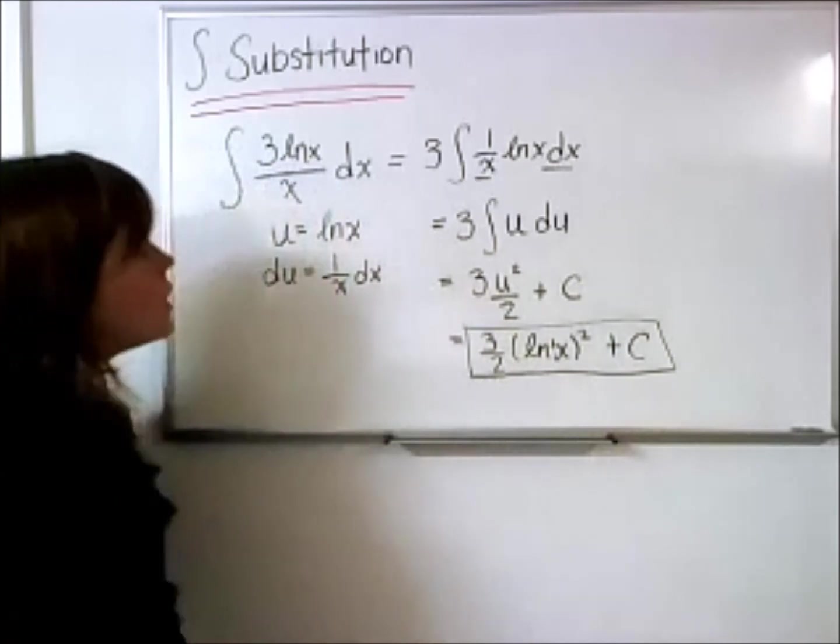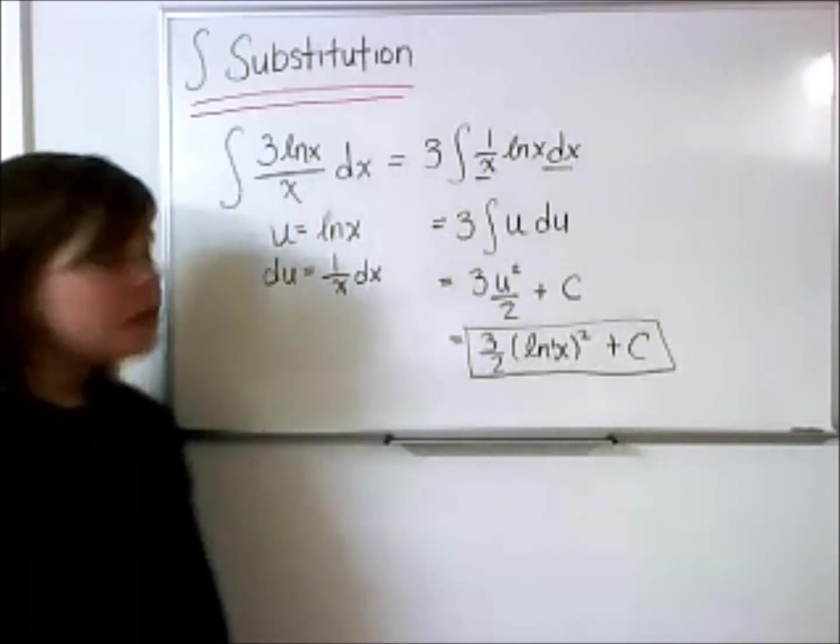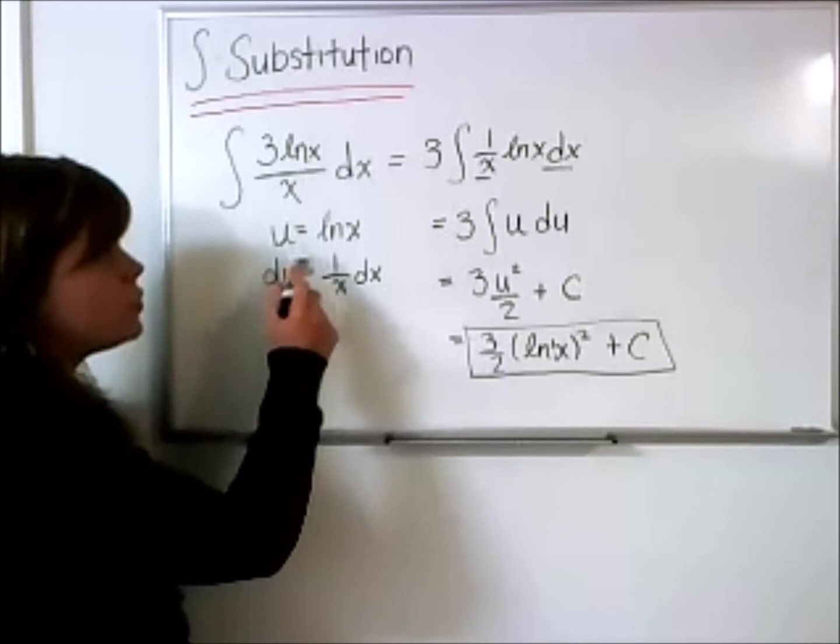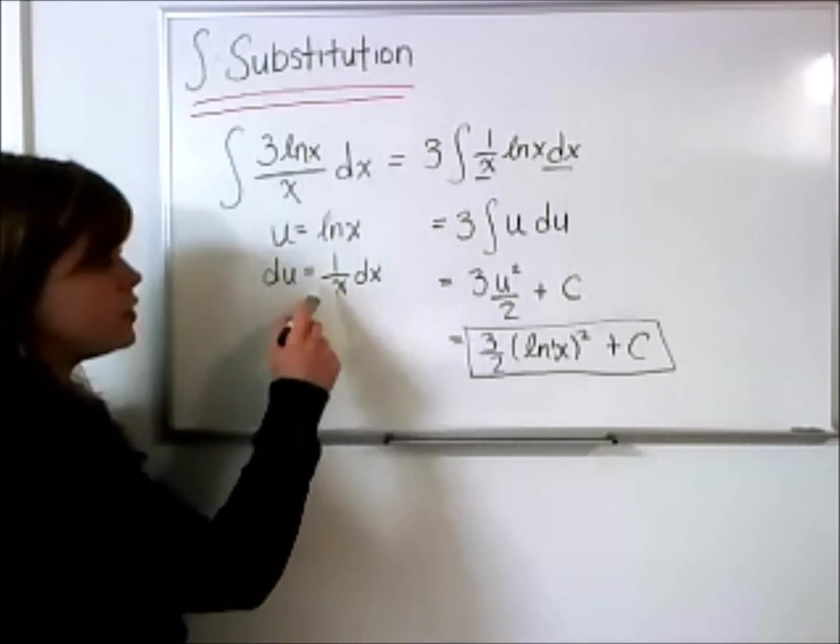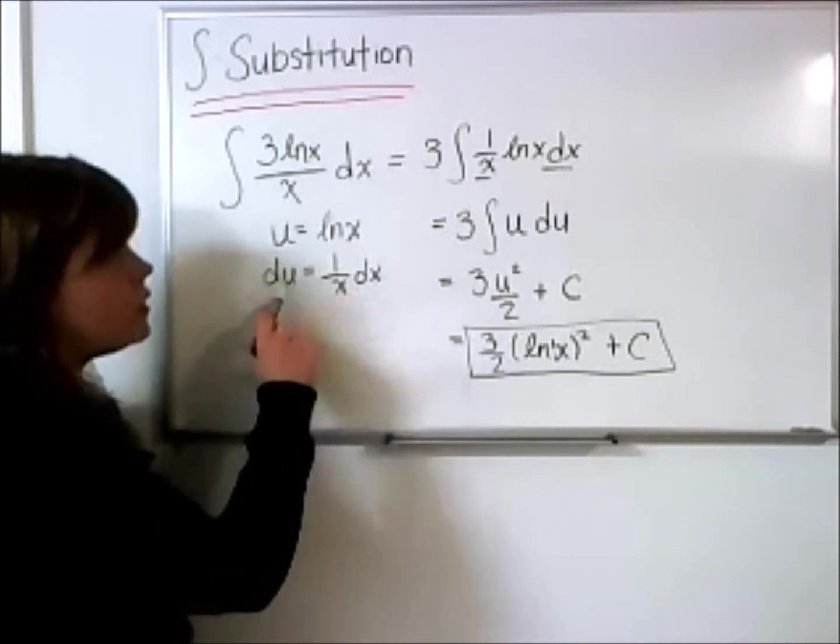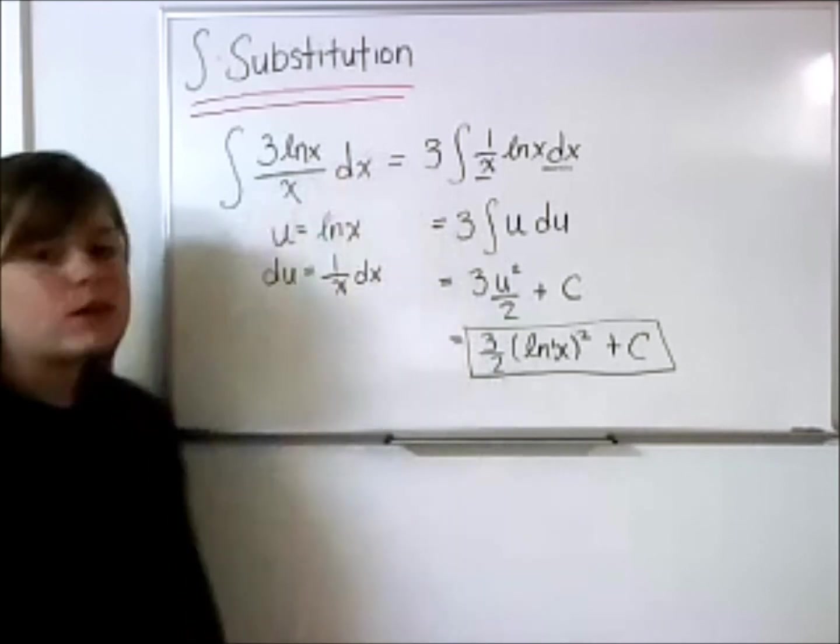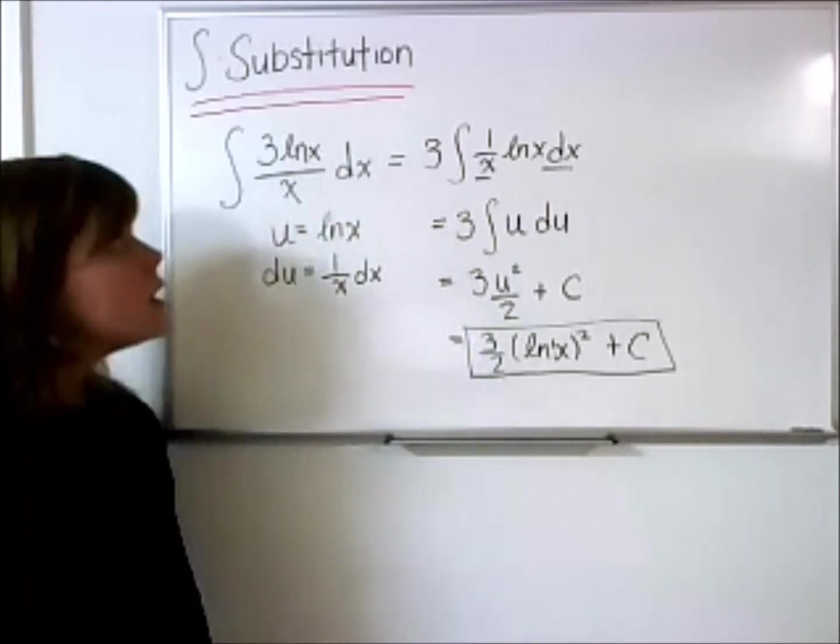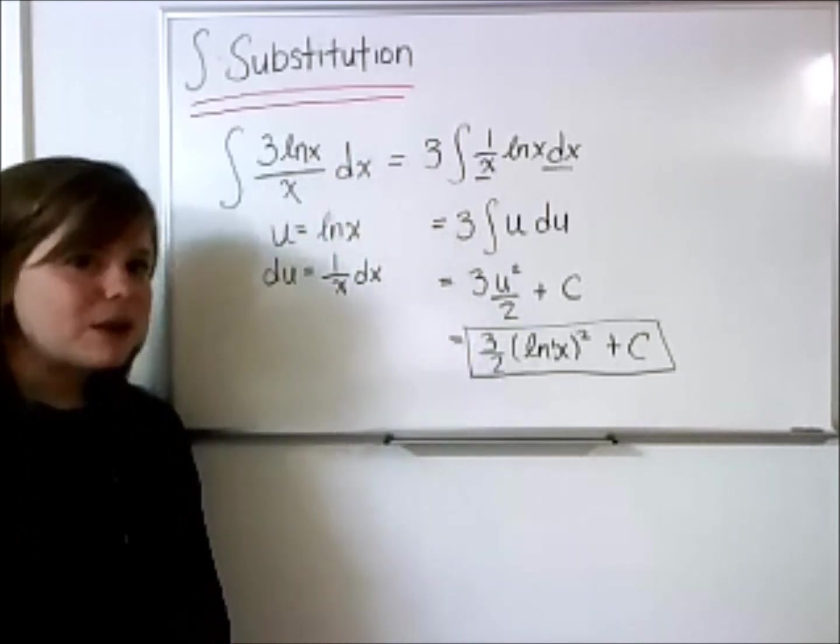And there's our final answer. It is always nice, when we choose this u, notice how our function is nicely, the du then took in the rest of what was in our integrand. Sometimes, it does not happen that way, and we have to go back.